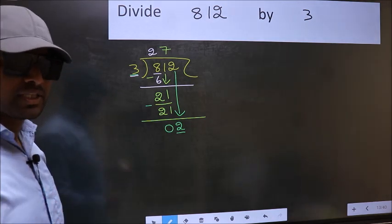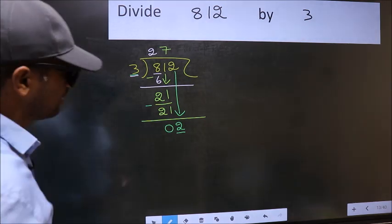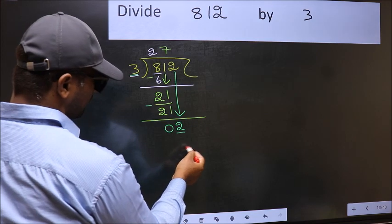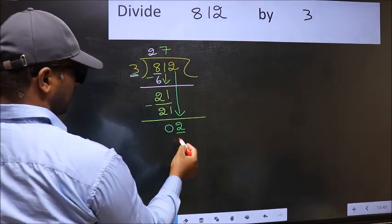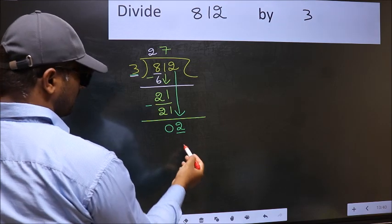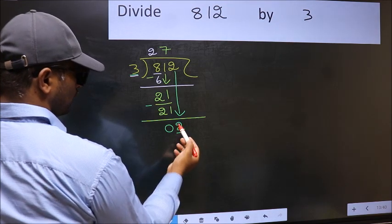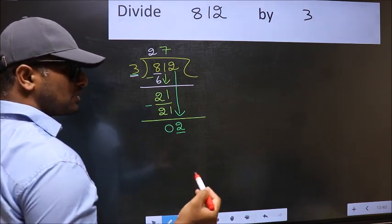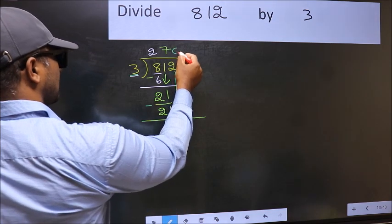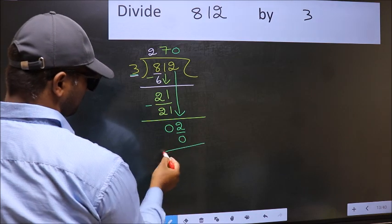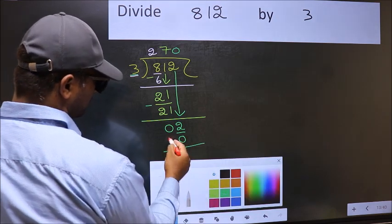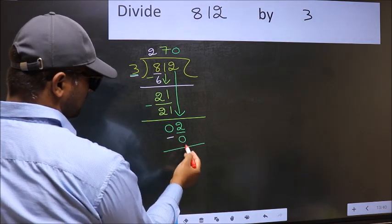Instead, what you should think of doing is what number should we write here? If I take 1 here, I will get 3. But 3 will be larger than 2. So what we should do is we should take 0. So 3 into 0, 0. Now you should subtract 2 minus 0, 2.